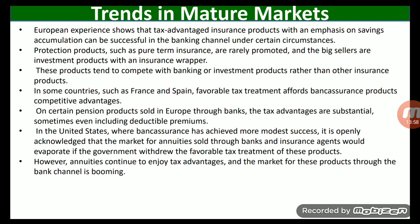European experiences show that tax-advantaged insurance products with an emphasis on savings accumulation can be successful in the banking channel under certain circumstances. Protection products such as pure term insurance are rarely promoted, and the big sellers are investment products with an insurance wrapper. These products tend to compete with banking or investment products rather than other insurance products. In some countries such as France and Spain, favorable tax treatment affords bank assurance products competitive advantages on certain pension products, where the tax advantages are substantial.